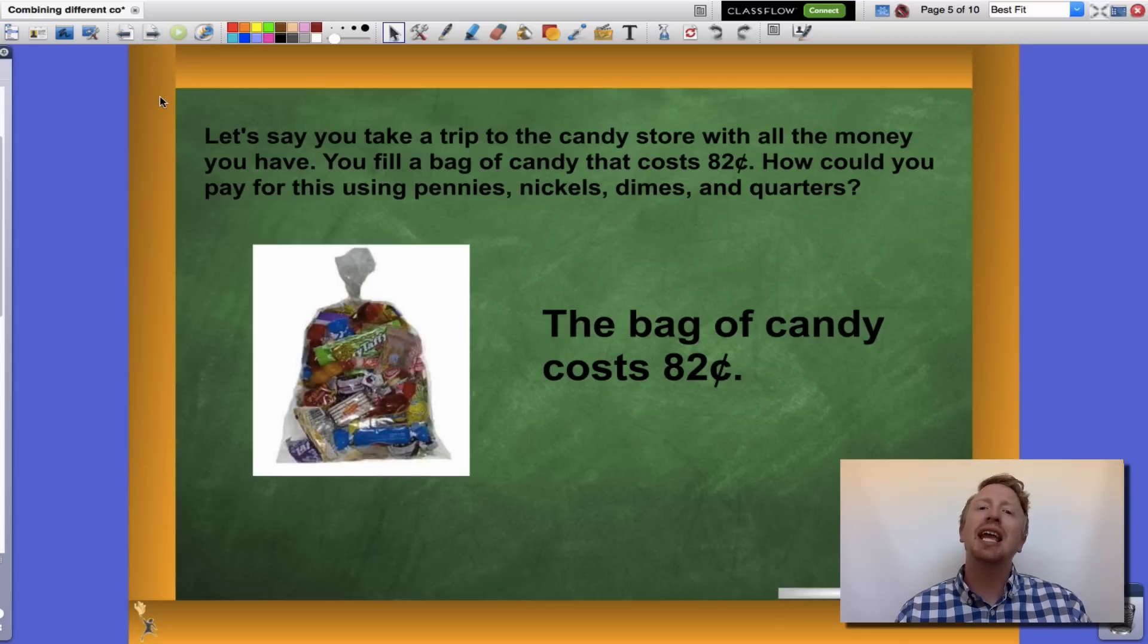Let's say we take a trip to the candy store this time with all the money we have. You fill an entire bag of candy worth 82 cents. How can we use a combination of pennies, nickels, dimes, and quarters to come up with 82 cents?